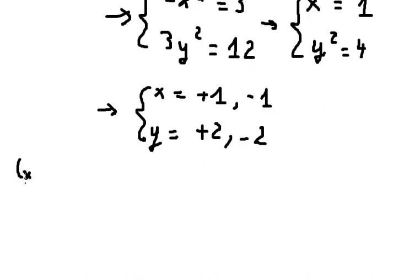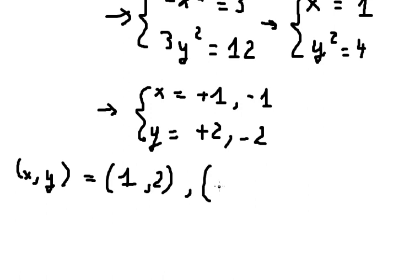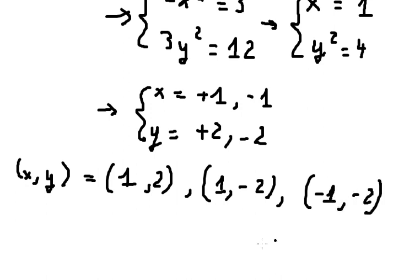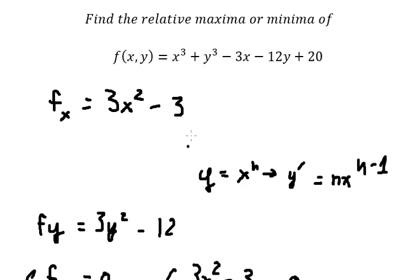So in this case we have four critical point solutions: (1, 2), (1, -2), (-1, 2), and (-1, -2). The question asks us to find the relative maxima and minima.